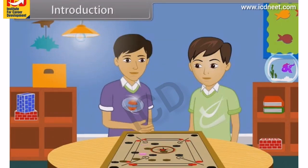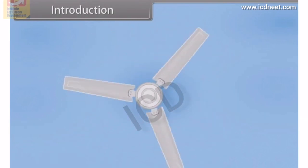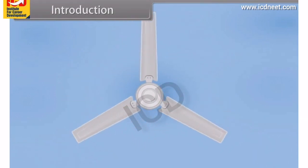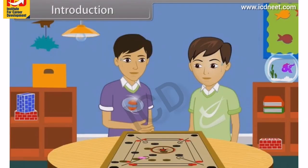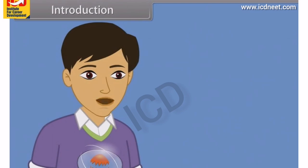It is summer vacations. Sanjay and Rahul both are enjoying the game of Carom. Suddenly, the light went off and the fan goes off. After few minutes, Rahul and Sanjay both were sweating. 'Brother, I am so much sweating. Why is it happening?' 'Me too, brother.'